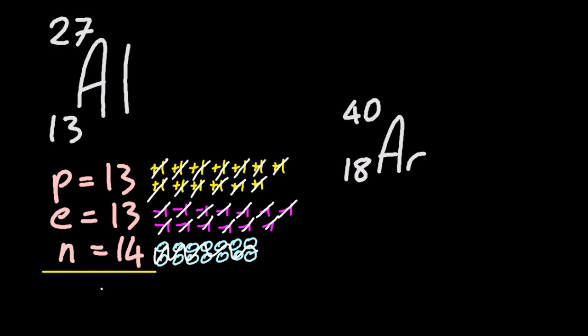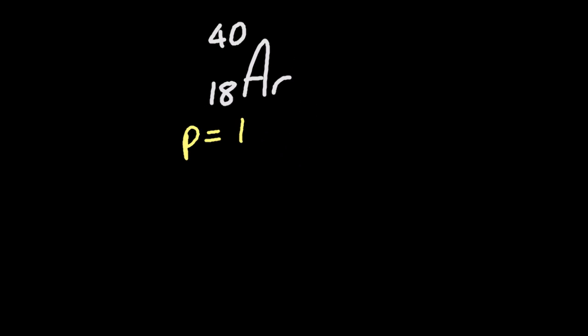Argon: 18 protons, 18 electrons, and 22 neutrons. The difference between the number 18 and 40 is 22. And the small number, the atomic number, that's the electrons and also the protons.